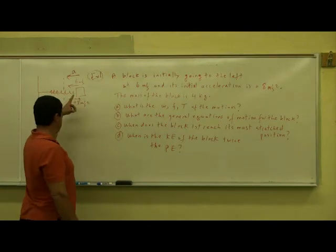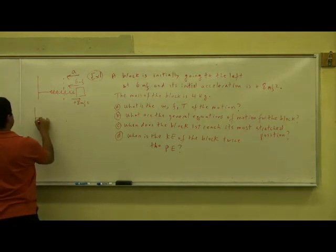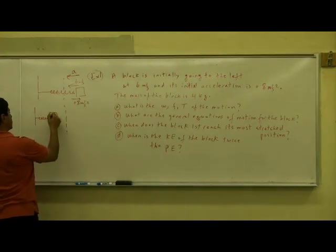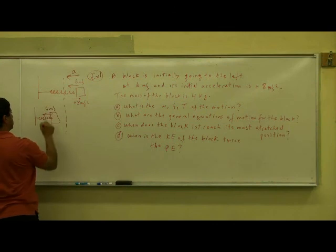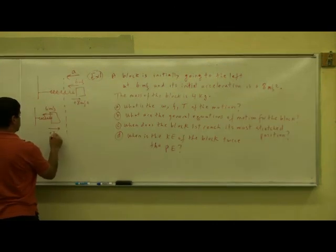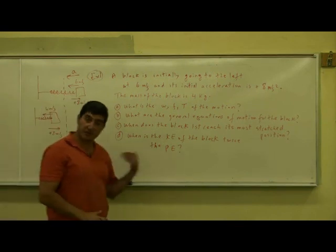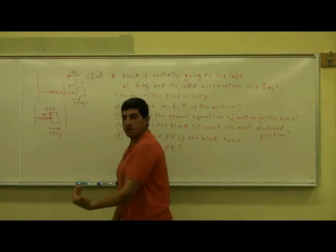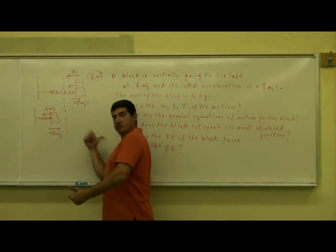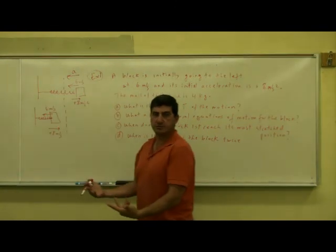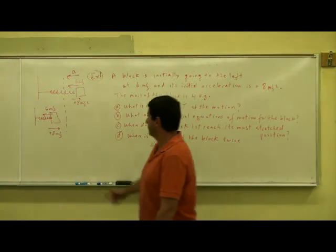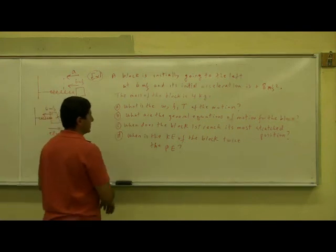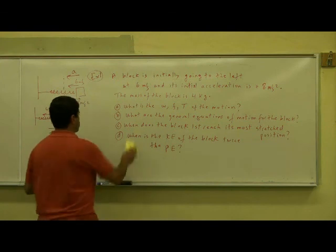So a positive acceleration — acceleration to the right while moving to the left — means it's slowing down. This picture is better: here's the equilibrium, the block is moving to the left at six meters per second and the acceleration is to the right. This means the block is to the left of the equilibrium, it's going to slow down, so its acceleration should be to the right. That means the initial position of the block is some negative number — x initial is negative.